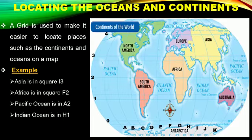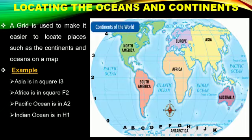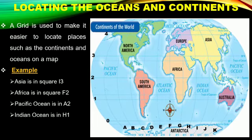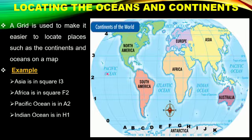In a similar manner, let's find out Africa. Africa is in square F2. Now if we come to example number 3, that is the Pacific Ocean. The Pacific Ocean is in square A2. In a similar manner, try to find out the Indian Ocean on your own.